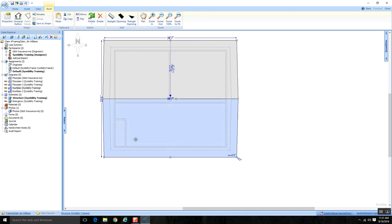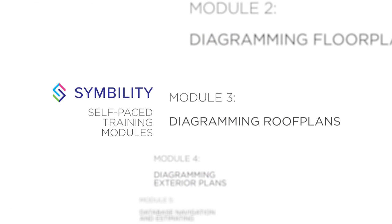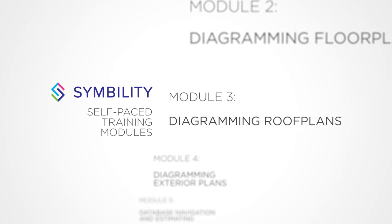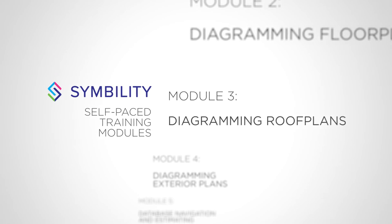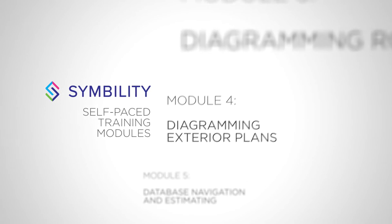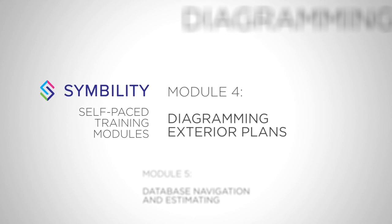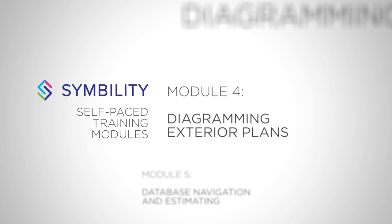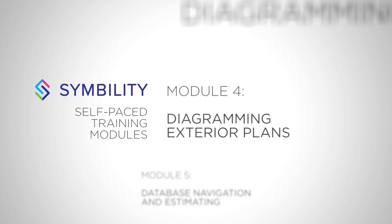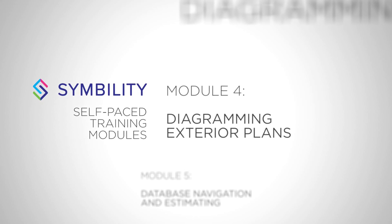The superimposed image is a really great tool because it allows us to snap a roof plan on top of a floor plan. Thanks for joining us as we learned how to diagram roof plans. Make sure you check out the next training module as we learn how to diagram exterior plans. Take care. Thank you.